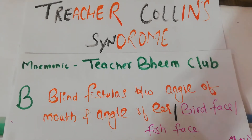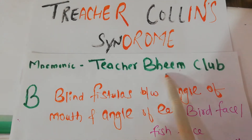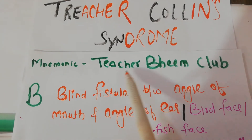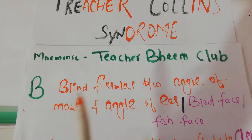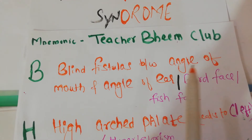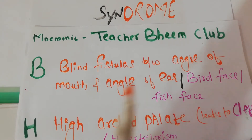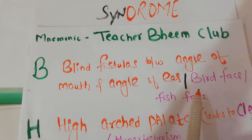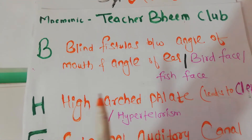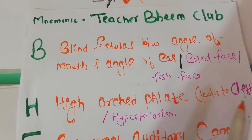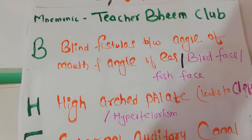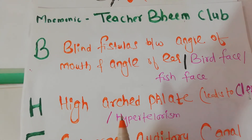The mnemonic for Treacher Collins Syndrome is BEAM CLUB. B stands for blind fistulas between the angle of mouth and angle of ear. B also stands for bird face appearance. H is for high arched palate, which leads to cleft — you will also see a cleft in Treacher Collins Syndrome.